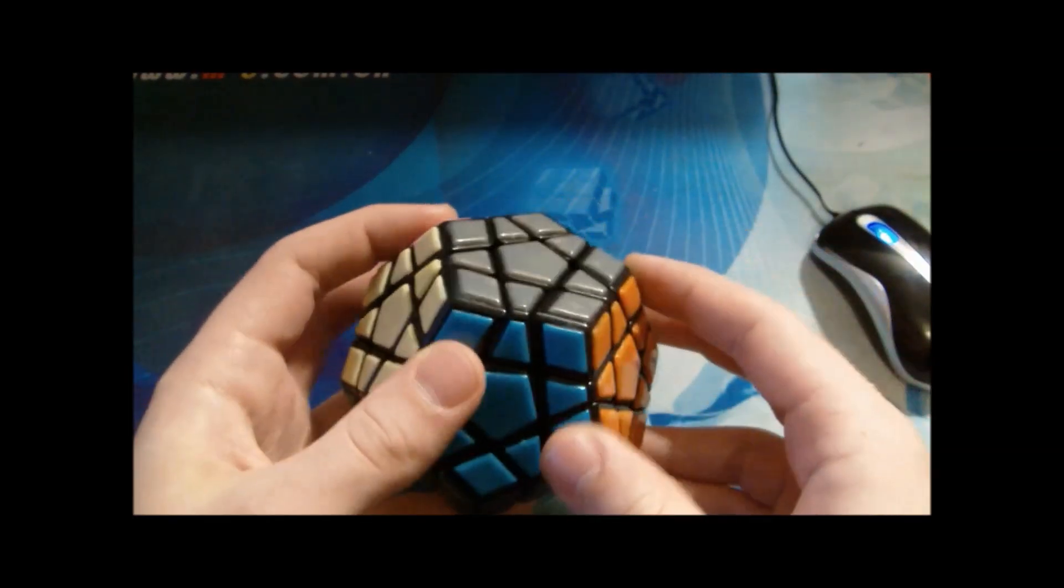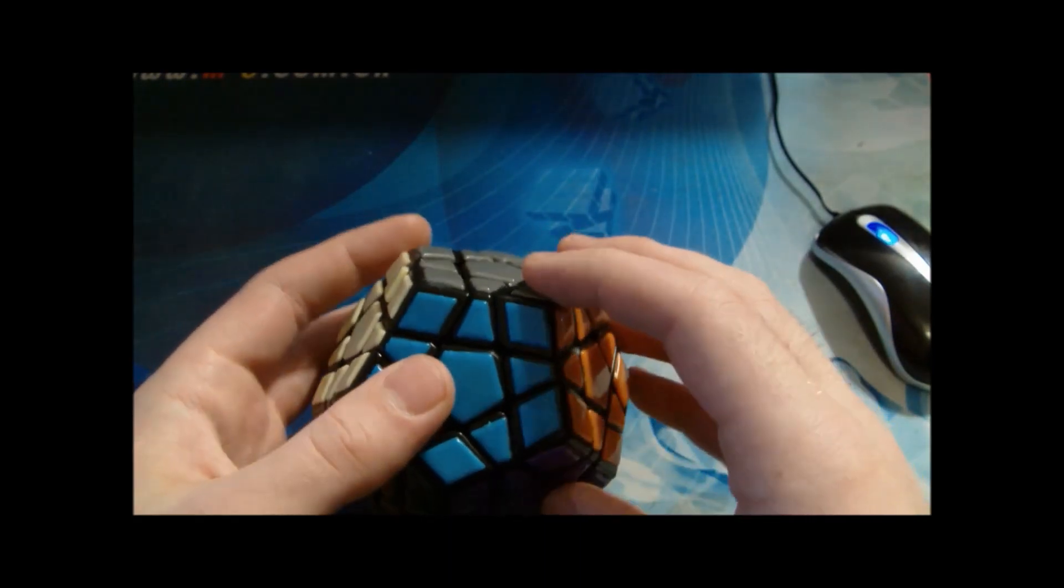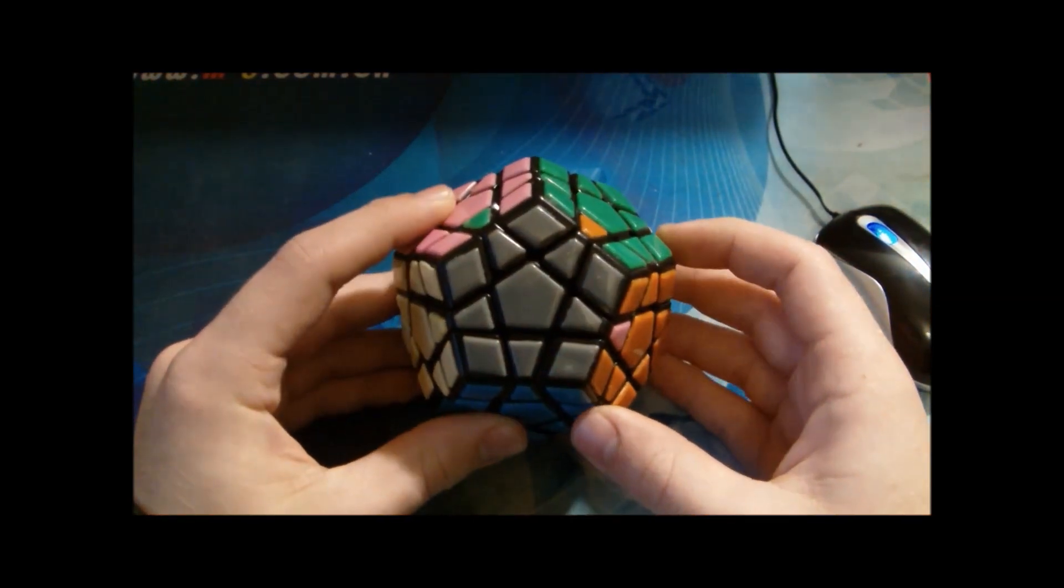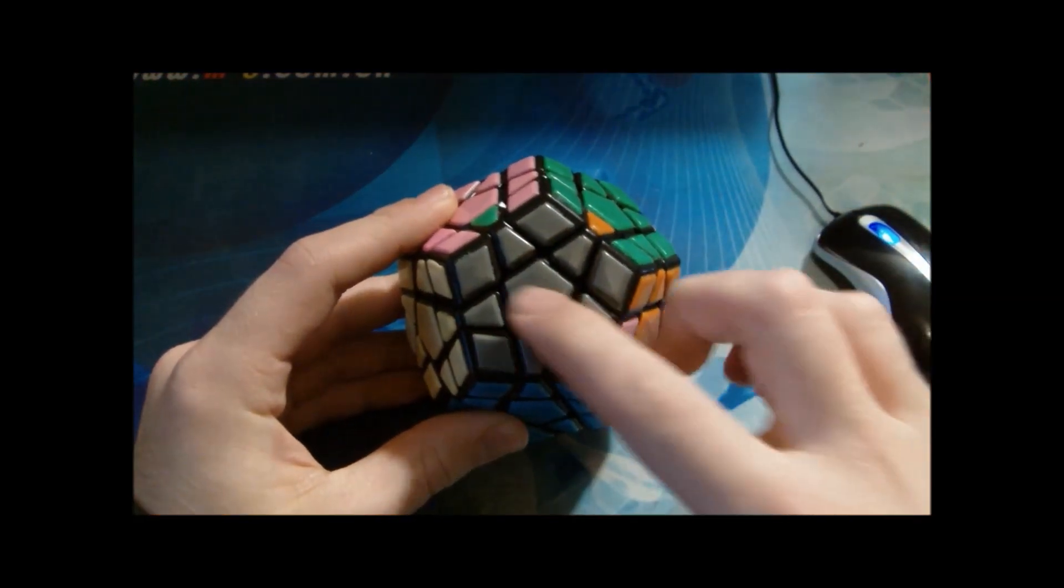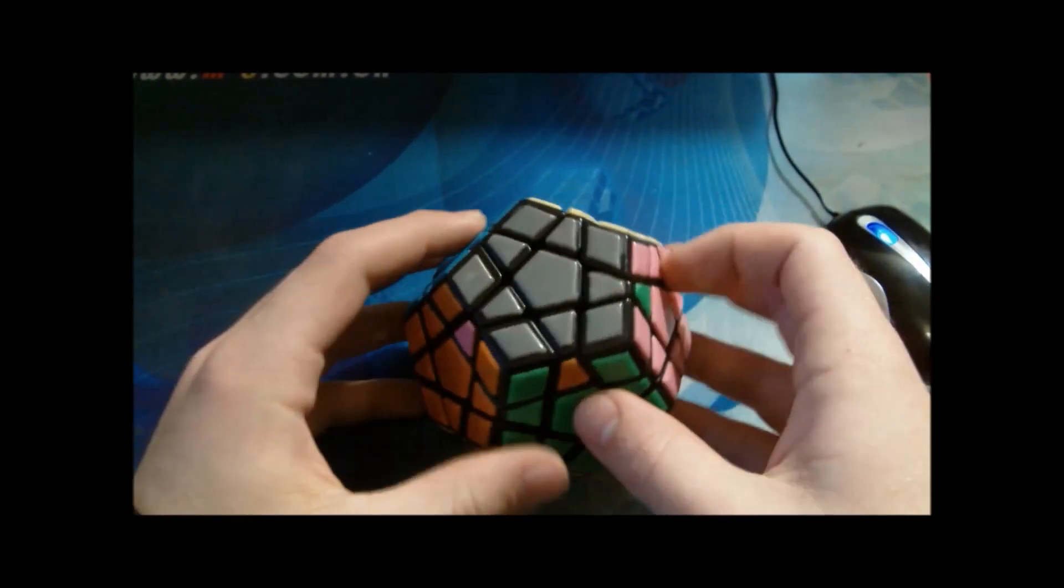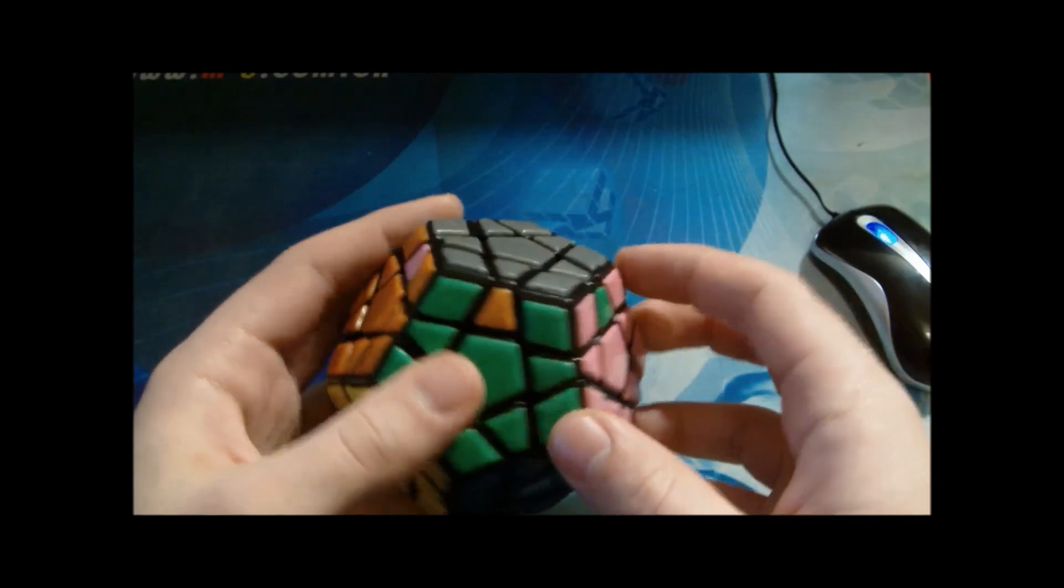Alright, this is the first U perm. I recognize it from this angle. I see that this unsolved edge goes to this position, and then I'll do a rotation, not on the table, but just do a rotation and I'll do this alg.